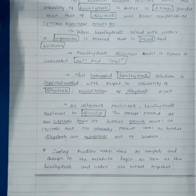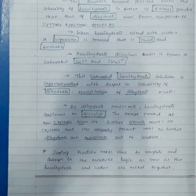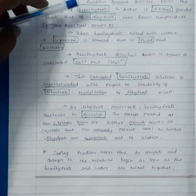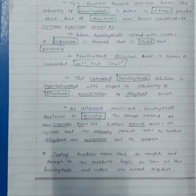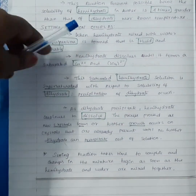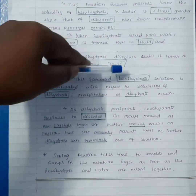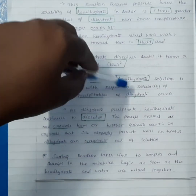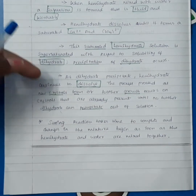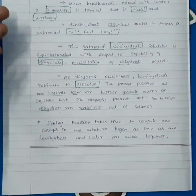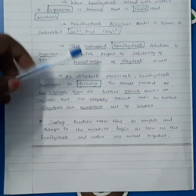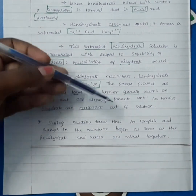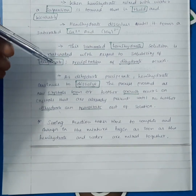To summarize: when hemi-hydrate is mixed with water, a fluid and workable suspension is formed. The hemi-hydrate dissolves forming Ca²⁺ and SO₄²⁻ ions. When the saturated hemi-hydrate solution becomes supersaturated with respect to dihydrate solubility, precipitation of dihydrate occurs and hemi-hydrate continues to dissolve. This process proceeds as crystals form or grow on existing crystals until no further dihydrate can precipitate. The setting reaction takes time to complete, and changes begin as soon as hemi-hydrate and water are mixed.